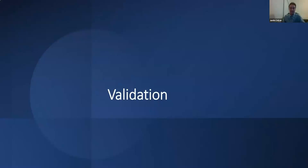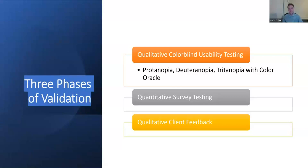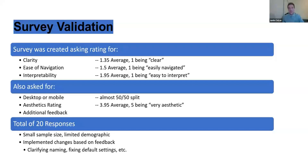Moving on to validation, there are three phases. The first is testing the dashboard for colorblind usability using a program called Color Oracle, which changes the screen's colors to mimic Protanopia, Deuteranopia, and Tritanopia. The next two phases are quantitative survey testing and qualitative client feedback. The survey asked participants questions about clarity, ease of navigation, and interpretability, which received average scores of 1.35, 1.5, and 1.95 respectively — indicating fairly clear, easy to navigate, and easy to interpret. The dashboard also received a 3.95 out of 5 for aesthetics.